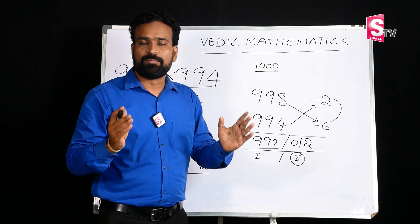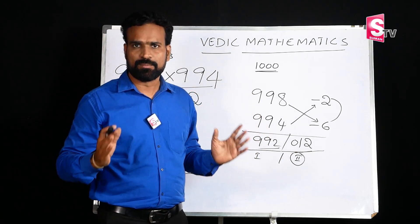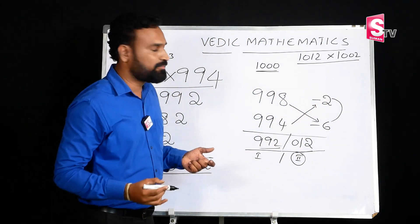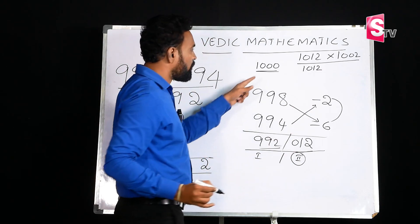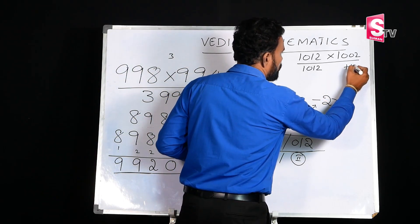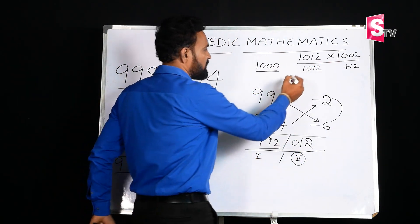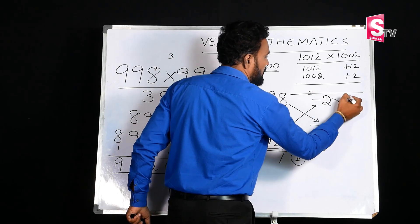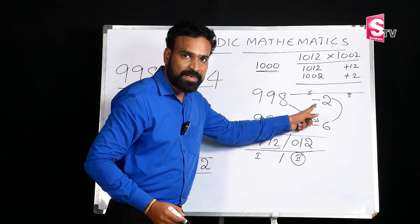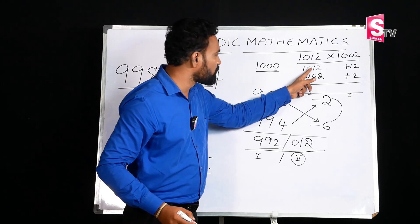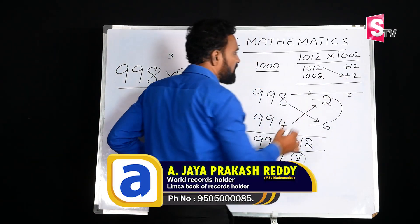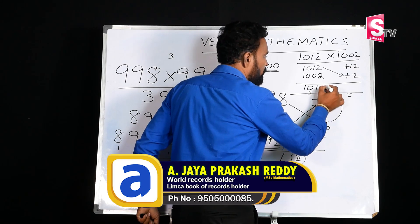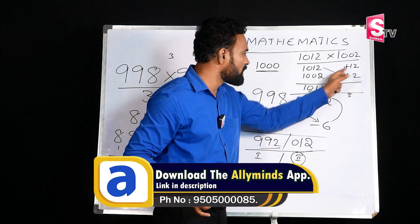The Vedic Mathematics method is 10 to 15 times faster than the school method. Now let's look at numbers above the base. For example, 1012 and 1002. We will do cross addition. 1012 plus 2, or 1002 plus 12, gives the same result: 1014. That is the first part of the answer.